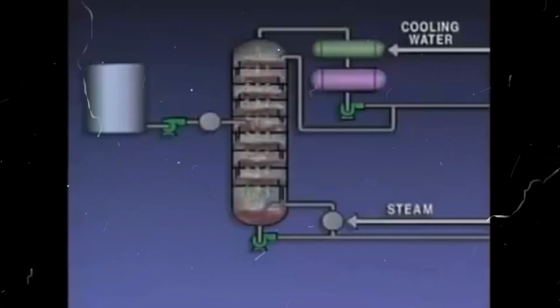Although all distillation towers serve the same basic function, they don't all have the same internal components. One type of tower uses sieve trays, covered in the tower operation part of this program. Here we'll look inside two other types of distillation towers. Let's start with a tower that uses trays with bubble caps. The holes in each tray are covered with caps called bubble caps. The slots in these bubble caps disperse the rising vapors through the liquid on the tray. Each bubble cap has many slots, and each tray has many bubble caps to spread out the vapors.